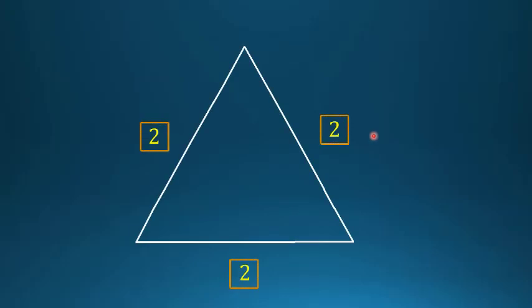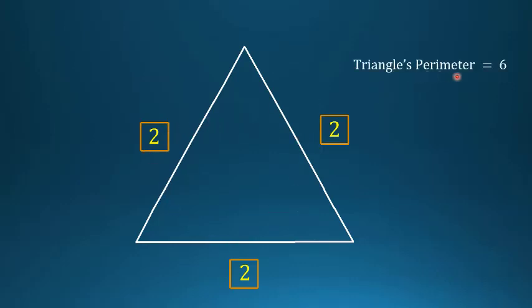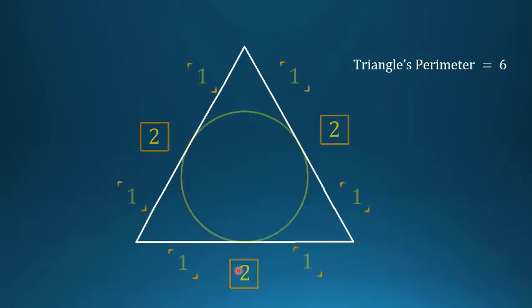Draw an equilateral triangle where all sides are equal to 2. In this triangle, the perimeter is 6 — that is, 2 plus 2 plus 2.